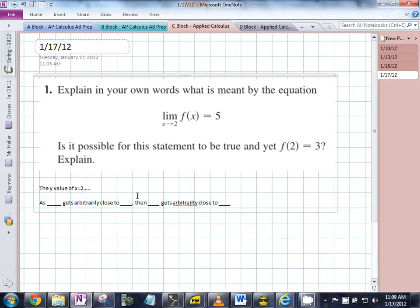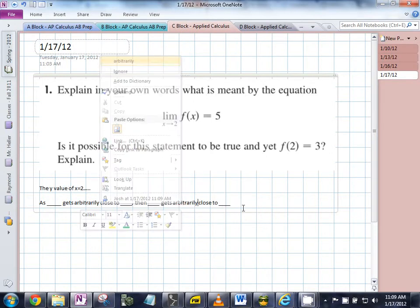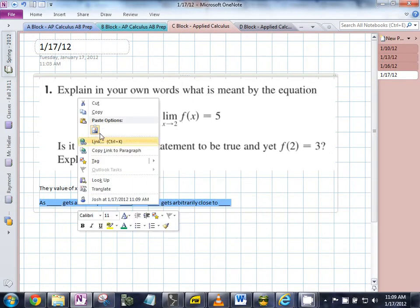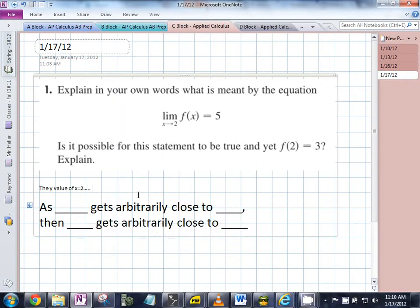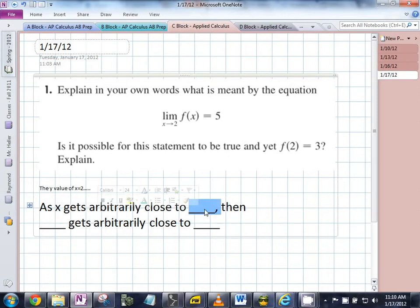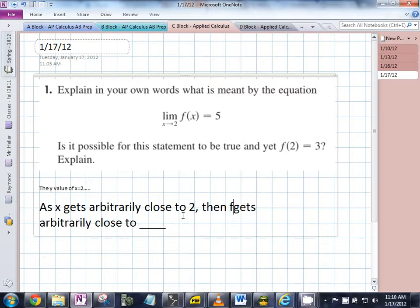Hold on. Arbitrarily. I'll make this bigger so you can see it. I'm leaving it intentionally vague so that you can fill it in here. As what gets arbitrarily? As x gets arbitrarily close to 2. Then f of x gets arbitrarily close to 5.